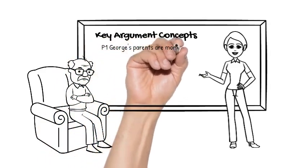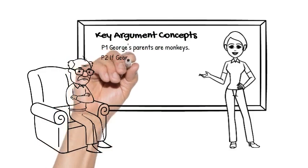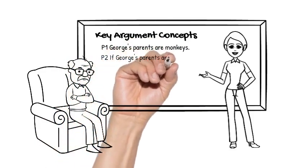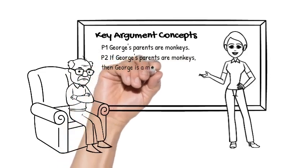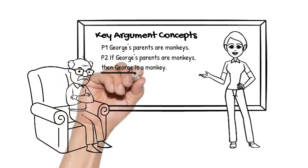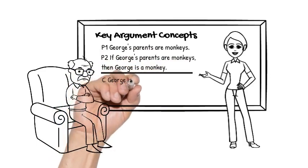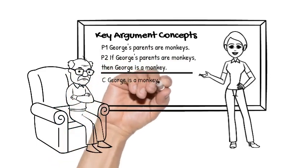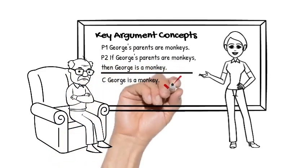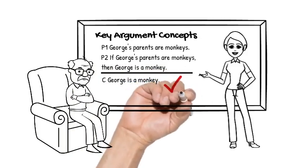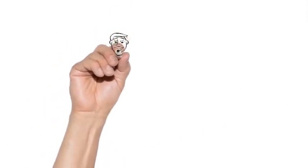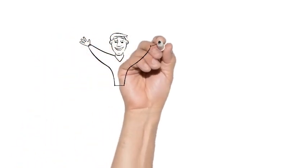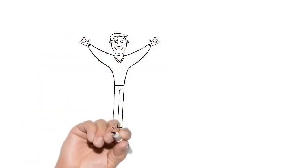Premise one of our argument said that George's parents are monkeys. Premise two said that if George's parents are monkeys, then George is a monkey. Again, true. Everyone whose parents are monkeys is a monkey. The conclusion of the argument is that George is a monkey. This argument, I'm just going to tell you, is formally valid. We'll see more about formal validity later. But for now, we've seen the gold standard of soundness, and we're ready to think more about arguments.